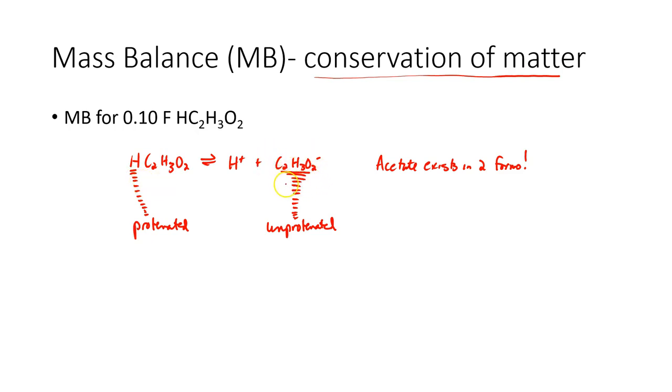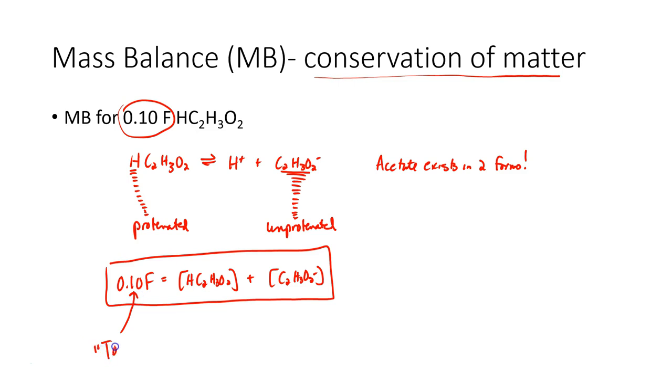And what do you think the concentrations of these two forms have to add up to? The formal concentration. So, the mass balance then would be 0.10 formal equals the concentration of the protonated form plus the concentration of the unprotonated form. That would be the mass balance. I kind of think of this as the total concentration, and that has to equal the sum of all the different forms. In this case, there were only two, a protonated and an unprotonated.